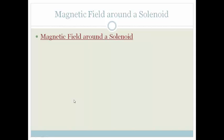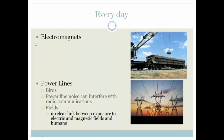Now we need to talk about actual uses in everyday life. We use solenoids and single coils as electromagnets. The reason we call these electromagnets is because they act as magnets when we have electricity flowing through them.